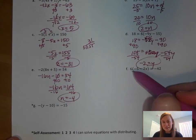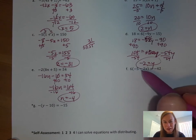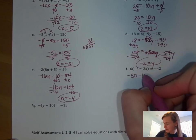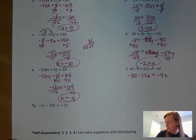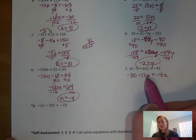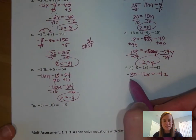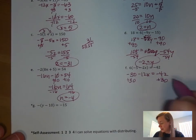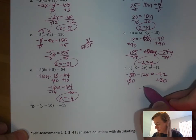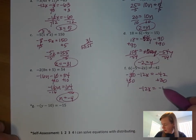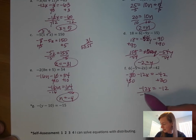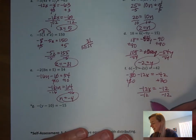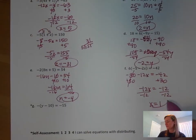6 is multiplying negative 5 minus 2x, so let's distribute. 6 times negative 5 is negative 30, and 6 times negative 2x is negative 12x, all equal to negative 42. Get rid of the number not with x — the negative 30 — by adding 30 to both sides. You're left with negative 12x equals negative 12. Divide by negative 12, and x equals 1.